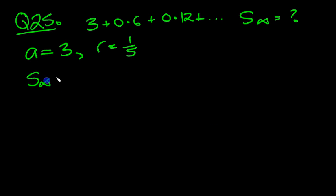Now, s infinity then, the formula, is equal to a over 1 minus r. Nice and easy. But that is provided that r is less than 1, which it is. So there's no problem there.